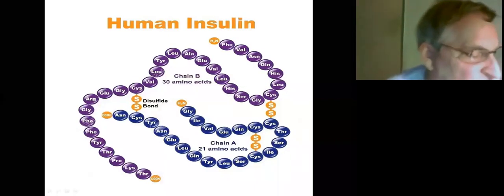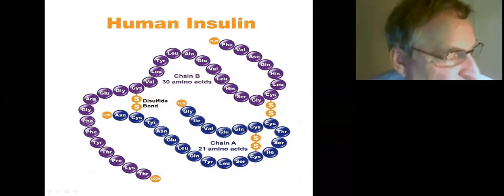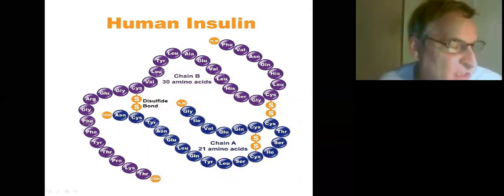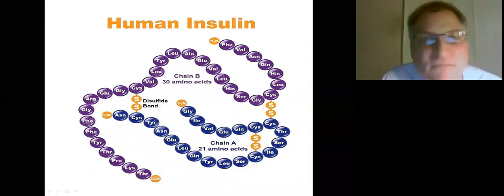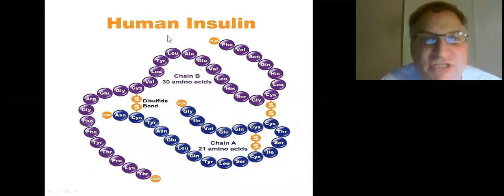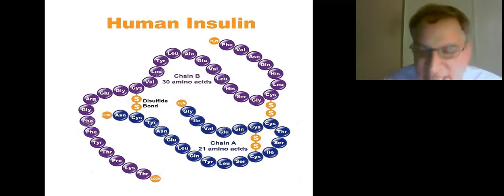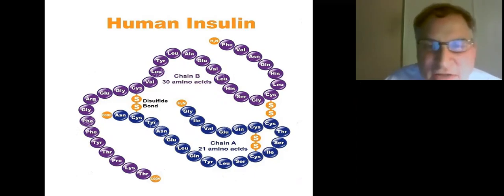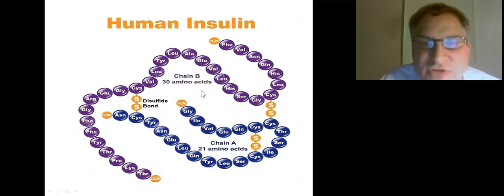In this presentation, I will show how the Open Insulin Project is going to produce two analogs of insulin: Glargine and Lispro. Here is an image of human insulin. There are two chains, chain A and chain B, and they are held together by two disulfide bonds, which keep the two chains from floating away from each other.